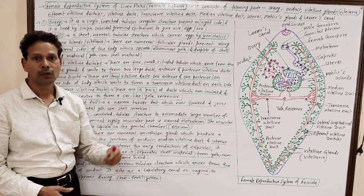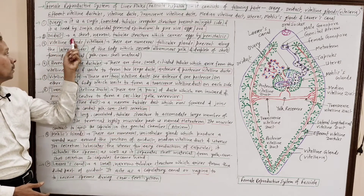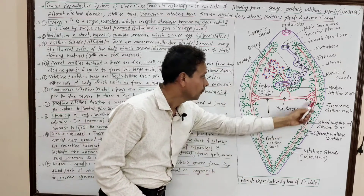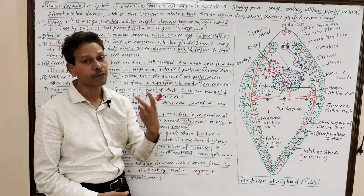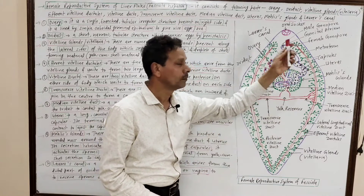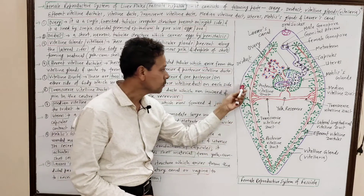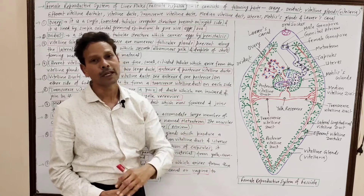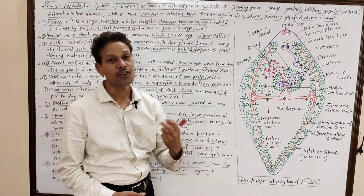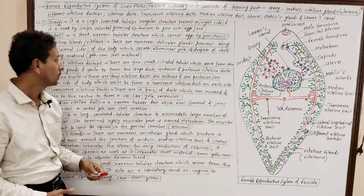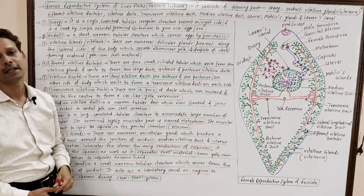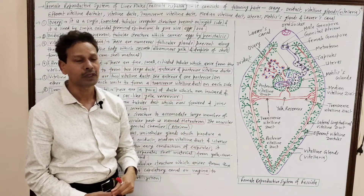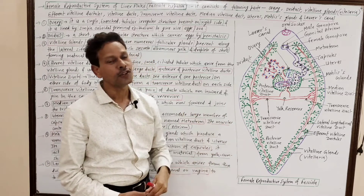The third part of the female reproductive system is the vitelline glands, or vitelaria. These are a large number of vitelline glands which are follicular structures present on both sides of the body. These vitelline glands secrete albuminous yolk and shell-forming material — that is why it is named yolk-cum-shell material.